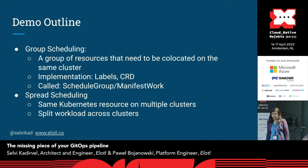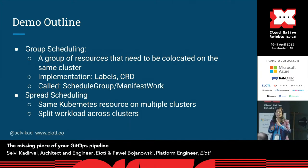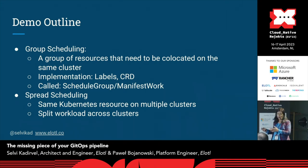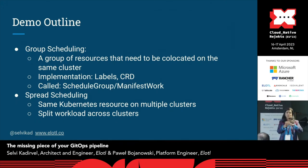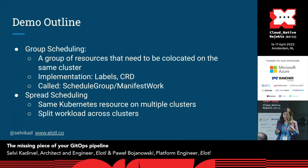There's also spread scheduling, which provides an extra control knob. For example, if you want the same Kubernetes resources not on any one subset cluster but on all of your subset clusters — such as a namespace — you can use the spread scheduling policy. Additionally, a single Kubernetes resource can be split across clusters: if you had a deployment with 100 replicas and wanted to split it 25%/75%, you could use this policy to place your workloads.